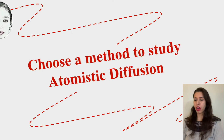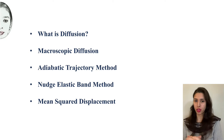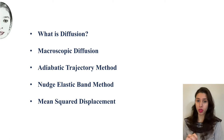Hi everyone, today I'm going to talk about methods to study atomistic diffusion. If you're new to computational chemistry and wonder which method of atomistic diffusion will suit your system, I'm here to help. After a brief description of what diffusion is and what microscopic diffusion is, I'm going to describe three methods used to study diffusion in solid states and review the good and the bad about them so that you can choose for yourself.